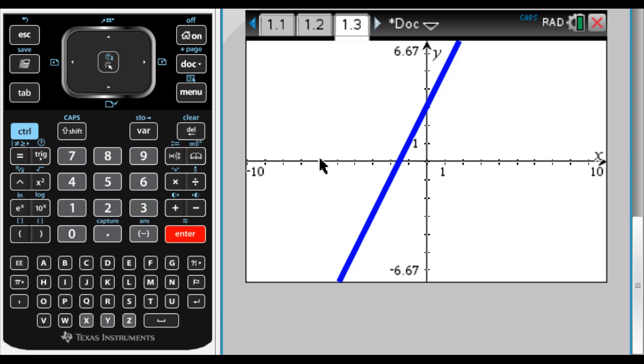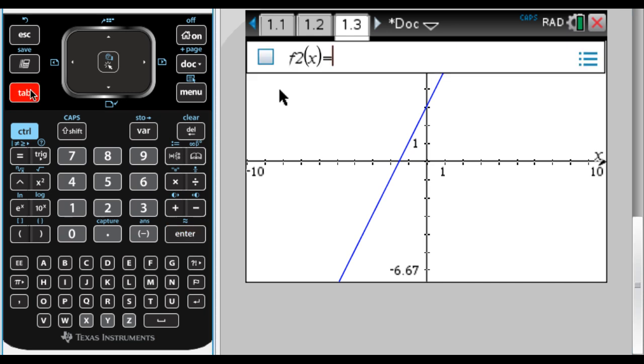And it's going to graph for me. But notice the place where you enter the equation disappeared as soon as I did that. To get that back, and this is really important, you press Tab and it shows up. But now I'm in f2, which is the second equation that it'll graph. And if I want to see the original one, I have to arrow up.